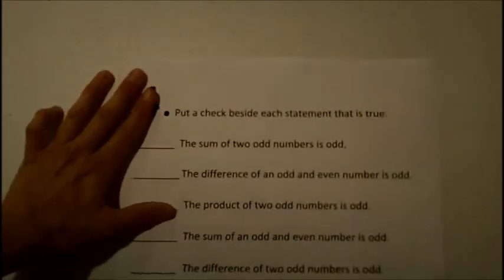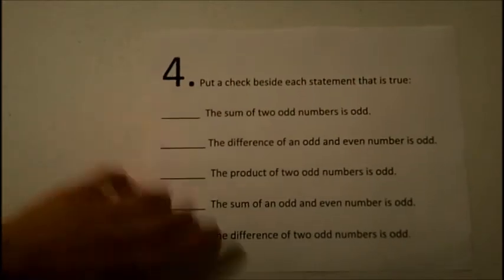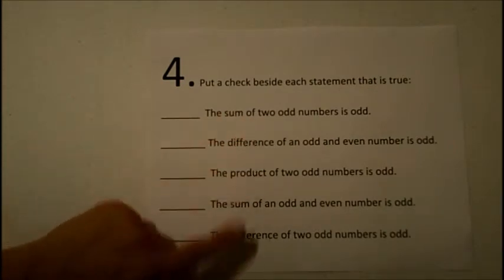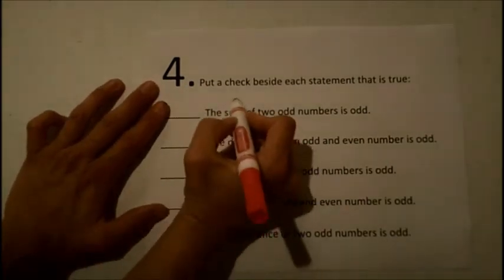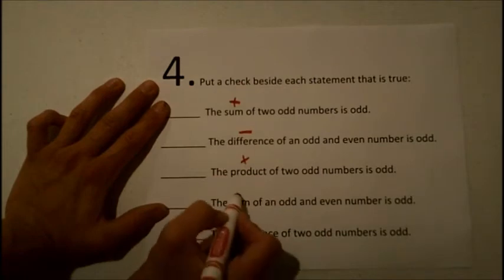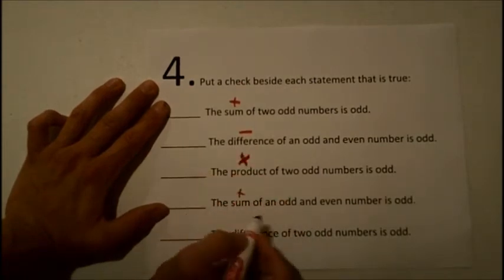For number 4, we have to put a check beside each statement that is true. I think that many of you missed this problem because you forgot what these operation words mean. So first, let's go through and mark each of the operations. Sum means to add, difference is subtract, and product is multiply.